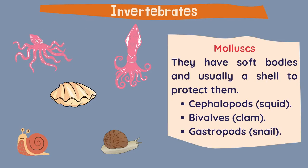Then we have mollusks. They have soft bodies and usually a shell to protect them. This shell could be outside their body or inside their body, like octopus and squid.